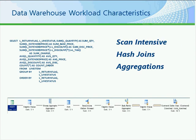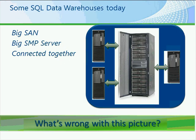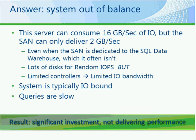In terms of data warehousing workload characteristics, here's an example. It's a very scan-intensive query. Hash joins and aggregations are often utilized—the select statement is doing a group by, an order by, and pulling a lot of data from a line item table. Some SQL Server data warehouses today typically have a big SAN and a big SMP server—a symmetric multiprocessor with between four and eight sockets and four to six cores—connected together. However, as you grow, you have certain issues, and the system becomes out of balance.